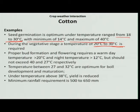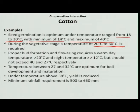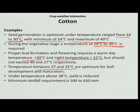Let us see the crop weather interaction for different growth stages, starting with the vegetative stage. Cool weather and prolonged cloudy weather harm vegetative growth. This crop requires an optimum day temperature of above 20 degree Celsius and a night temperature of above 12 degree Celsius for proper bud formation and flowering. During boll development and maturation, the required temperature is around 27 to 32 degree Celsius, and above 38 degree Celsius the yield is reduced. The minimum rainfall requirement for cotton is 500 to 650 mm.